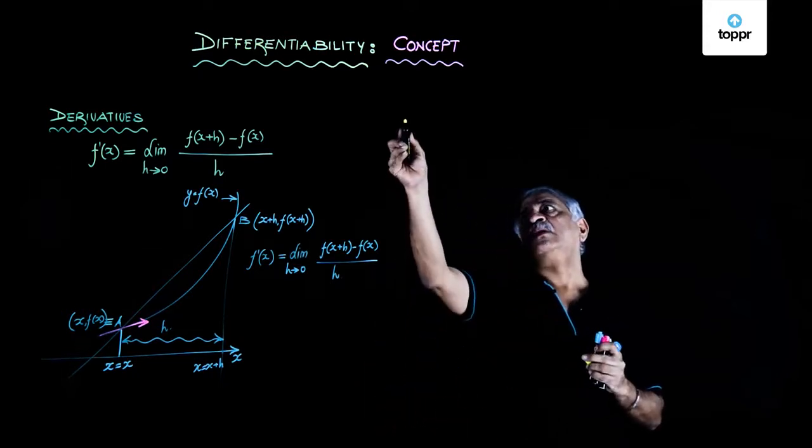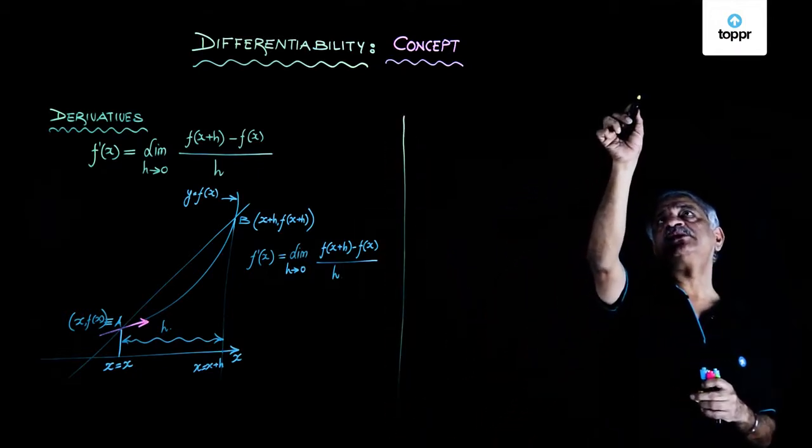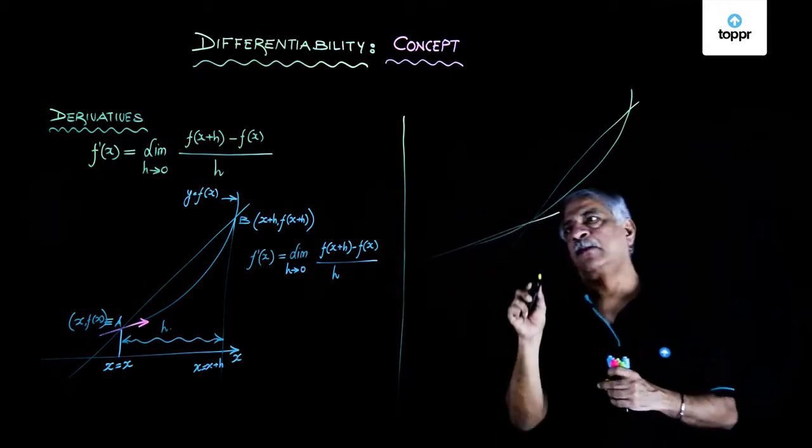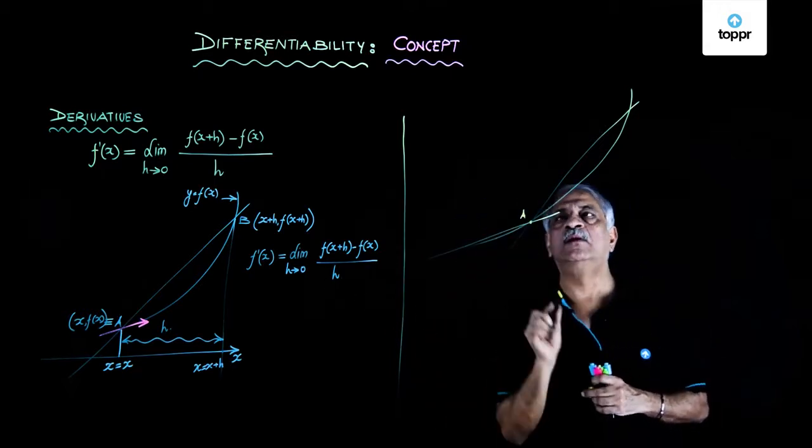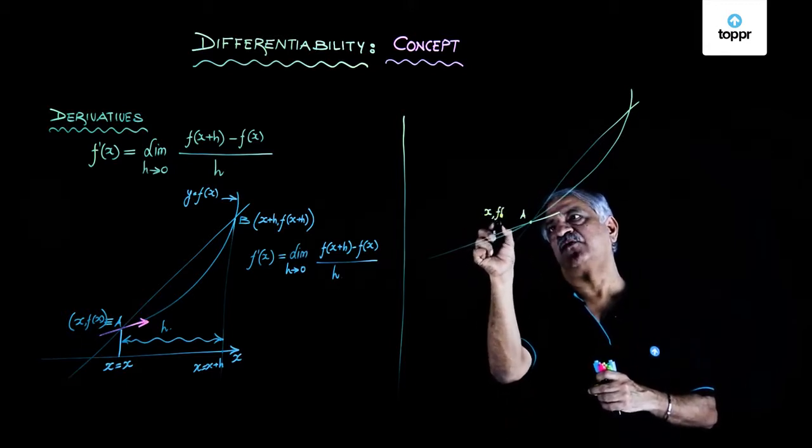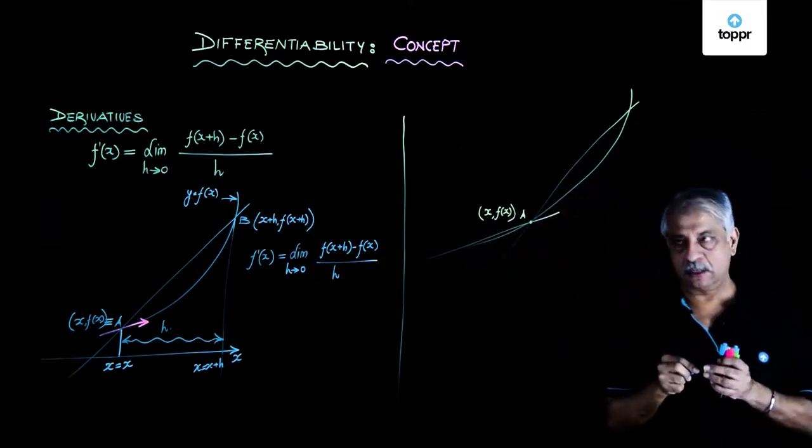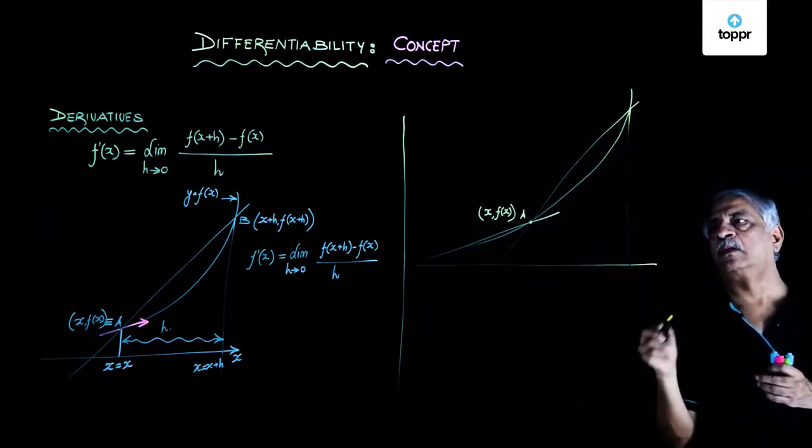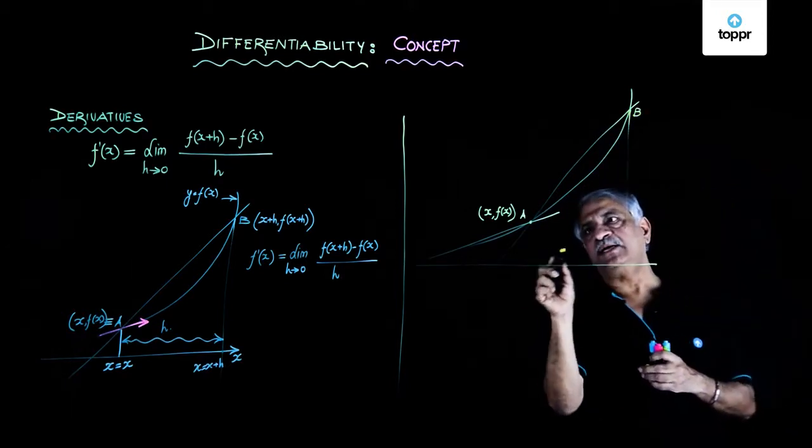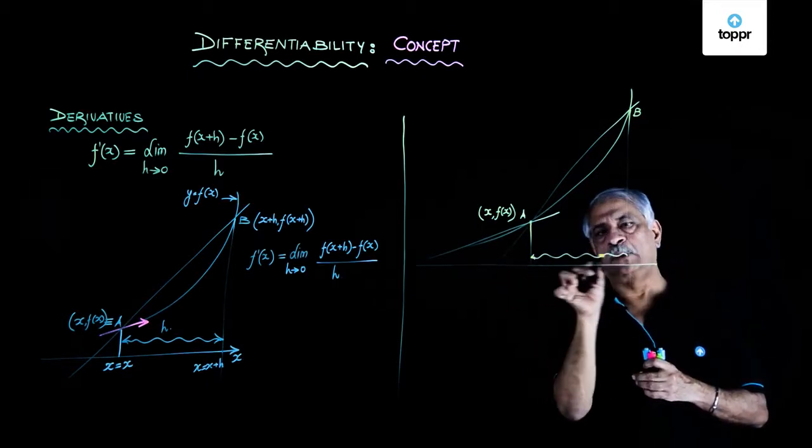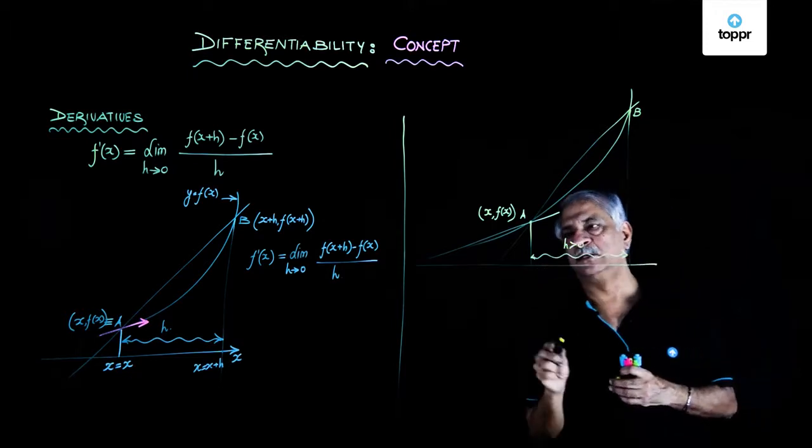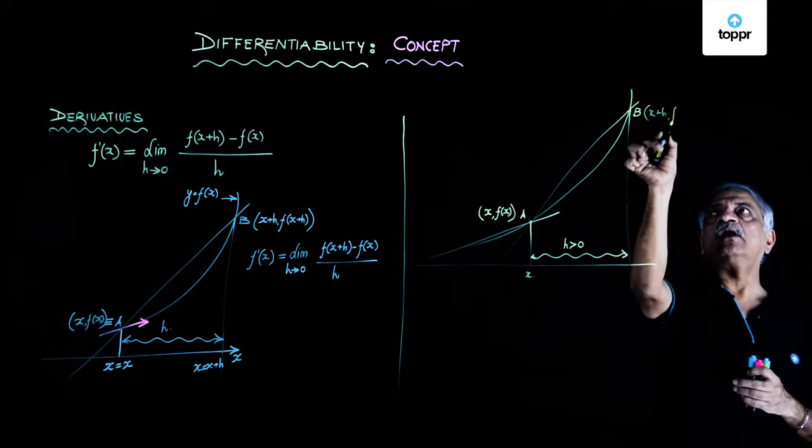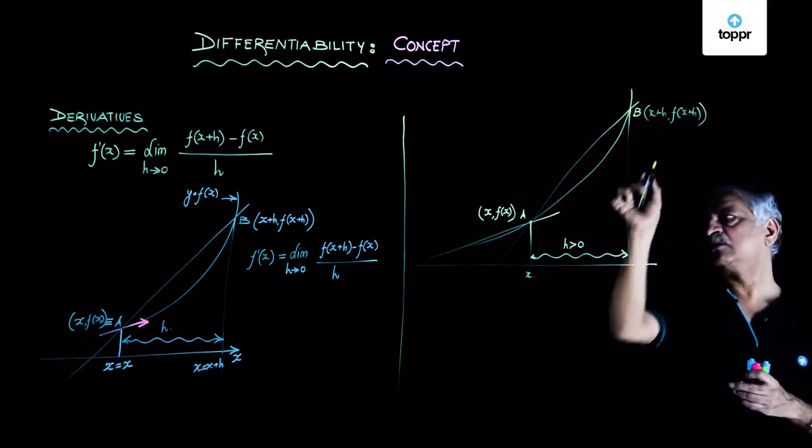That is, I draw the diagram in such a way that now I take this point A as (x, f(x)), and this we have taken point B. I take this as h. Please understand, h is a positive quantity. So this is x, and B is now (x+h, f(x+h)) as we have done here.